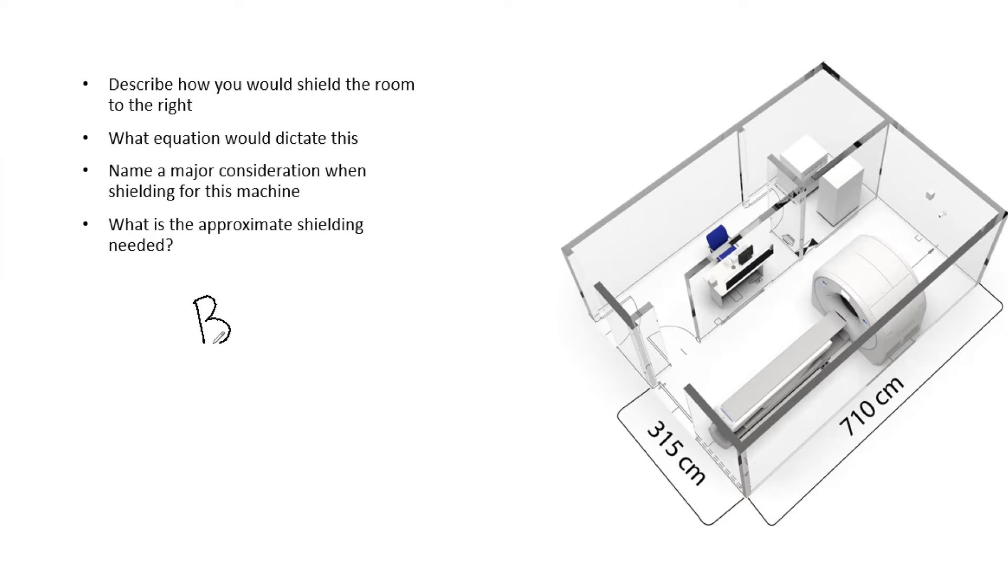To do that, first you need to know the permissible dose P. This is going to vary. It may be 0.1 millisieverts per week for controlled rooms, or 0.02 millisieverts per week for an uncontrolled room or barrier. You also need the workload W. The workload can be slightly different depending on what you are shielding.